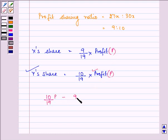minus 9P upon 19 is equal to 11,000. What we need to do further is we just need to solve it.